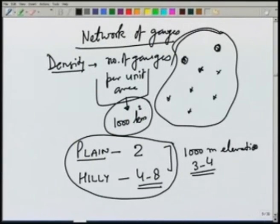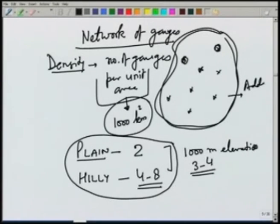This is about the network design — it will tell us how many additional gauges have to be put in this area. Once we collect the data and decide the rain gauge density and monitor on a daily or continuous recording basis, we need to analyze this data. The data can be presented as either a hyetograph or a mass curve. However, there may be various problems with the data — for example, there may be some data which is missing, or data which is inconsistent.